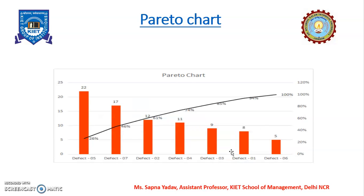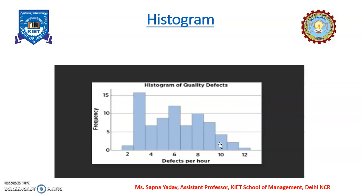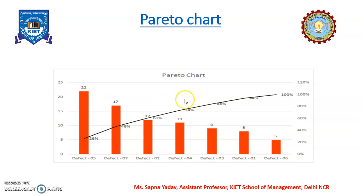Now let's move on to the next tool — the Pareto chart. A Pareto chart is simply the rearrangement of the histogram where we arrange the defects in decreasing order. In the histogram we can see the more common defects are near the second position and the least common are at the last. In Pareto analysis, we arrange all these defects in descending order.